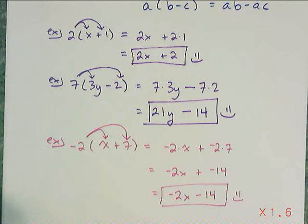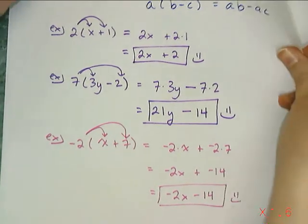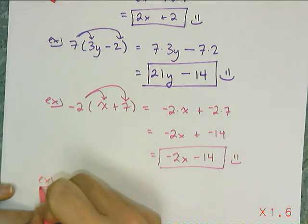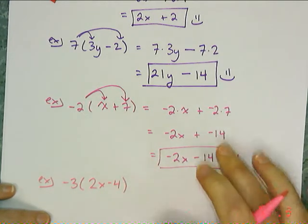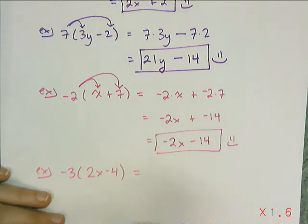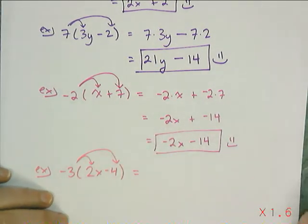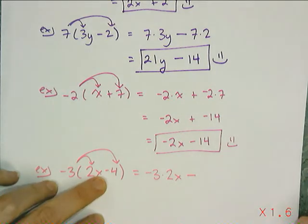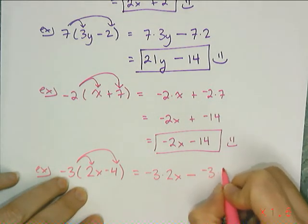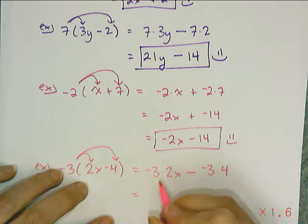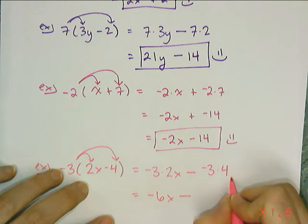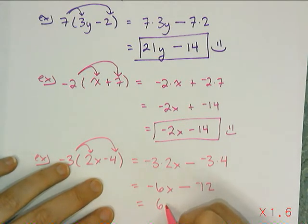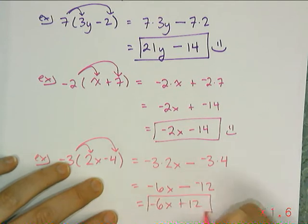Let's try the example negative 3 times the quantity 2x minus 4. Pause now if you want to try it on your own. I'm going to multiply negative 3 times each of the terms. I have negative 3 times 2x — that's a subtraction, the operation carries over — and then negative 3 times 4. So negative 3 times 2 gives me negative 6x, minus negative 3 times 4, which is negative 12. Combining minus and negative gives me negative 6x plus 12.